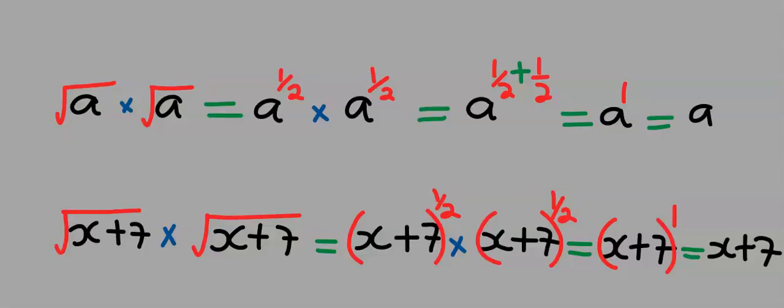Likewise, a can be anything. Here a can represent x plus seven, and from the law of indices it returned x plus seven.